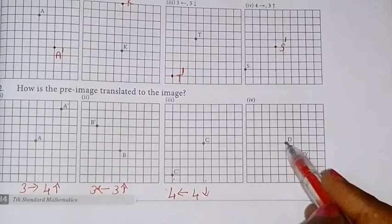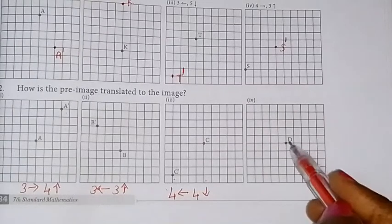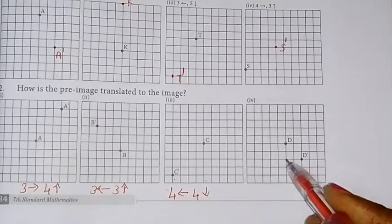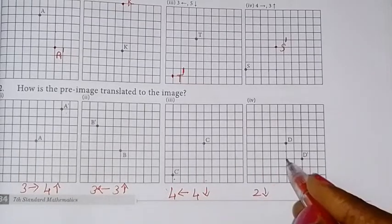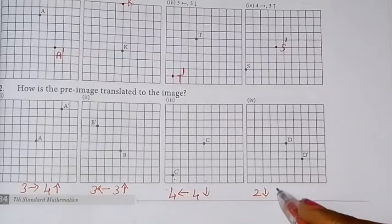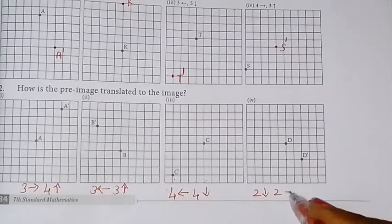D. 2 units first. 1, 2. So 2 units right side.